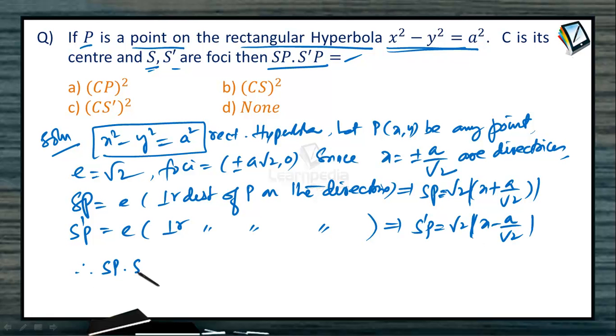So therefore, SP into S'P is equal to, if you take the product, that is 2 times (x² - a²/2). This can be written as 2x² - a².